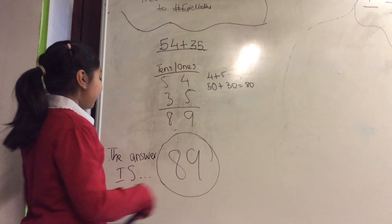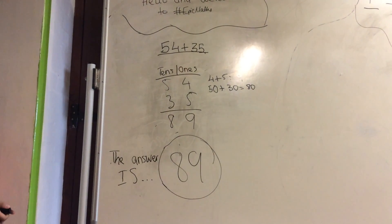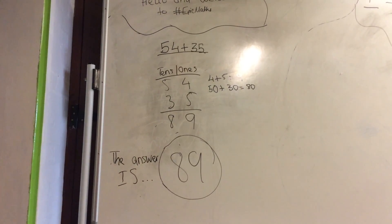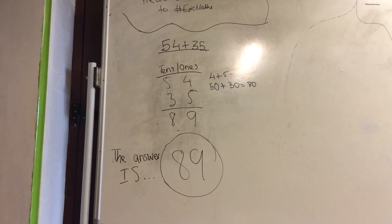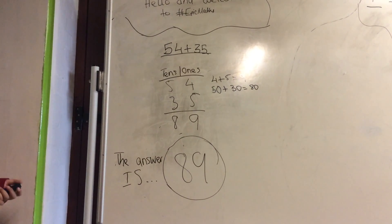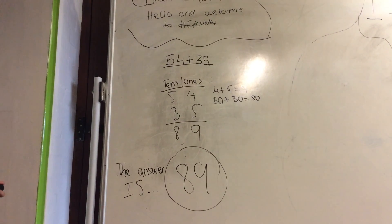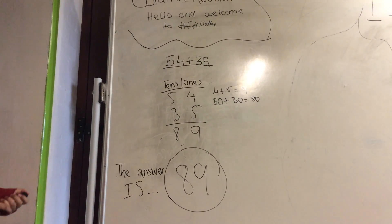The answer is 89. Here is the working: 54 and 35 in the correct spaces, tens and ones. So you do the ones first, 4 plus 5 which is 9. And then you do the tens, 50 plus 30 which is 80. So the answer is 89.